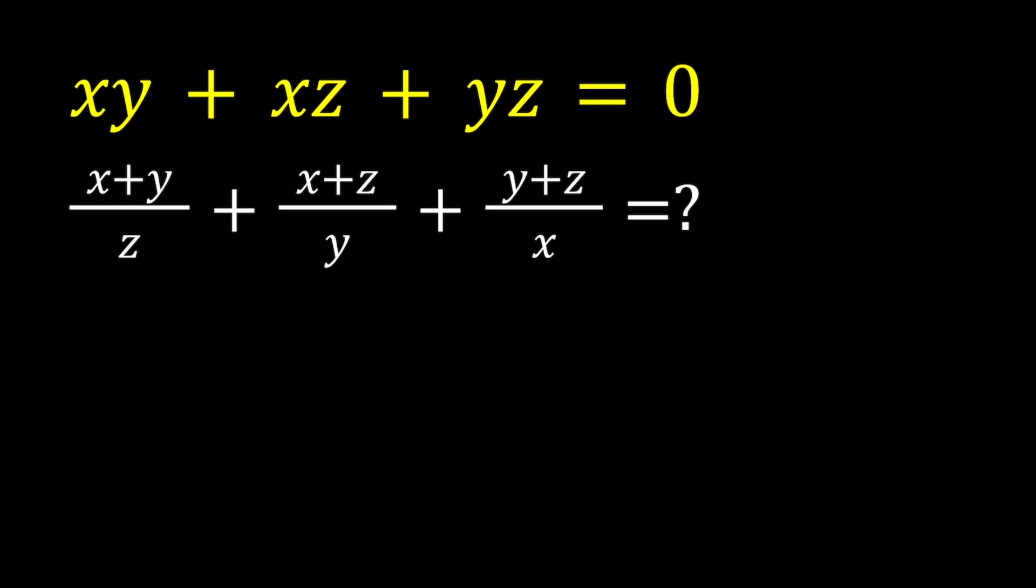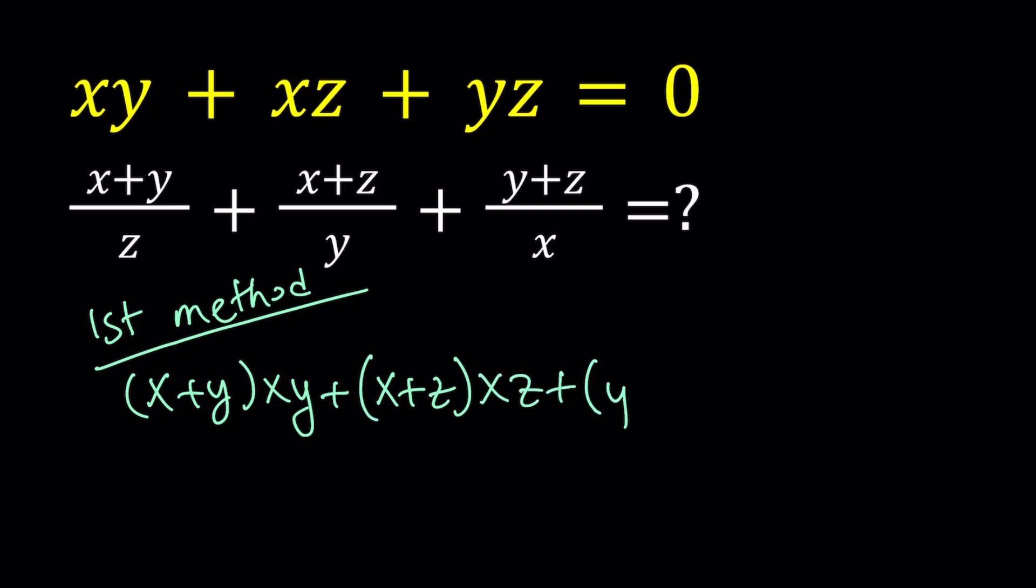So I'll be presenting two methods and let's start with the first one. For my first method I'm going to make a common denominator. The common denominator is going to be xyz. So let's multiply (x+y) by xy, (x+z) by xz, and (y+z) by yz. And all of that is going to be divided by xyz.